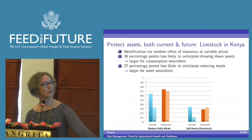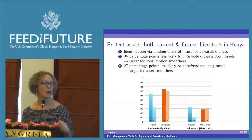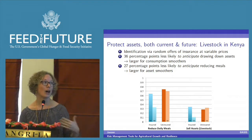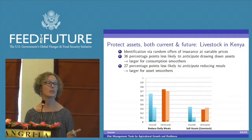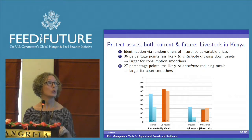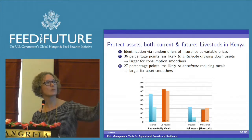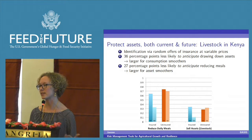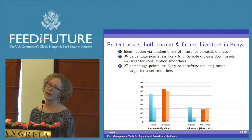Looking at whether households cut back on the number of meals fed to their families, insured households are much less likely to do so — able to maintain consumption and nutrition. We estimate a causal effect of about 36 percentage points on average, and 27% less likely for reducing yields. On the right-hand side, households are 36 percentage points less likely to sell their livestock when they have access to insurance.